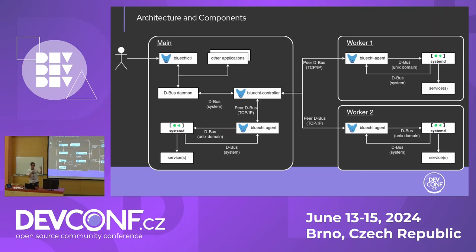This is essentially the overall architecture — an overview where we have all the components and essentially some workers with the agent running. We can of course scale that up to an arbitrary number of nodes.